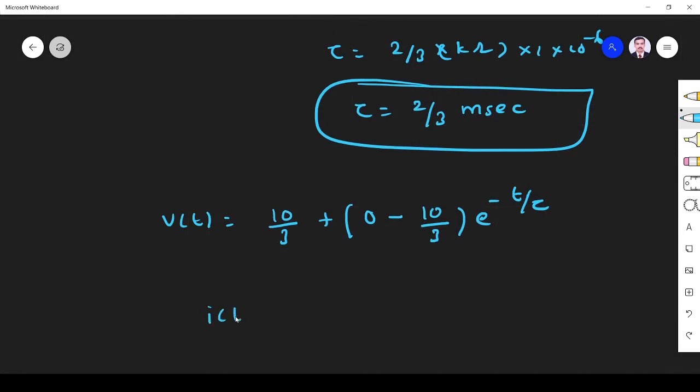So what is the current value? Current is nothing but current through the 2 kilo ohm. So I is equal to V by R, V by 2. So if I simplify, this is 10 by 3, [1 minus e^(-t/τ)]. So it is 10 by 3 becomes 5 by 3 because divided by 2. 1 minus e^(-3t/2). Tau you substitute.